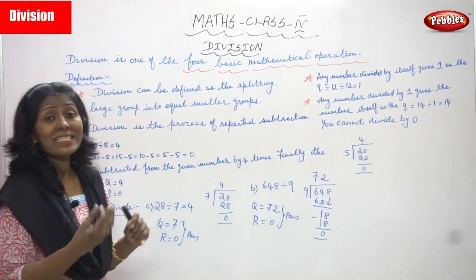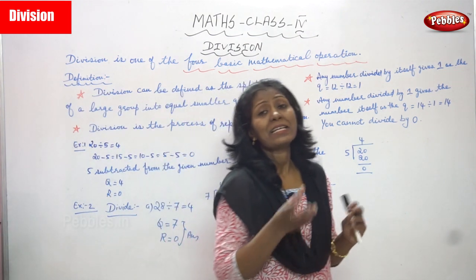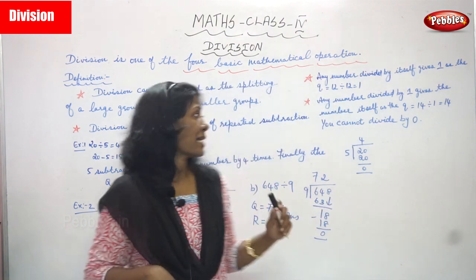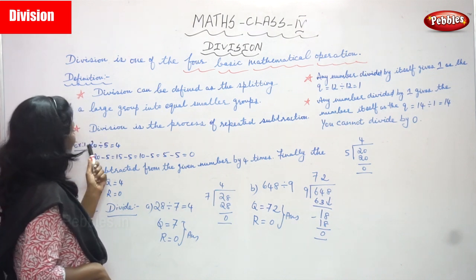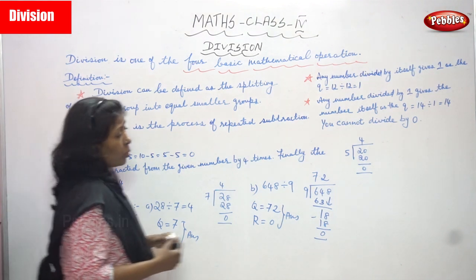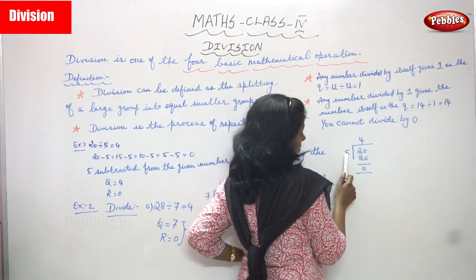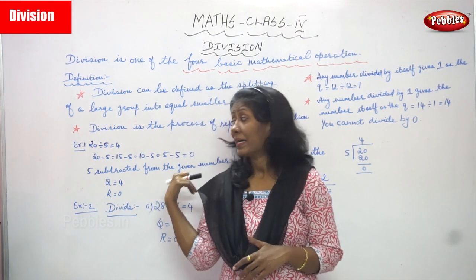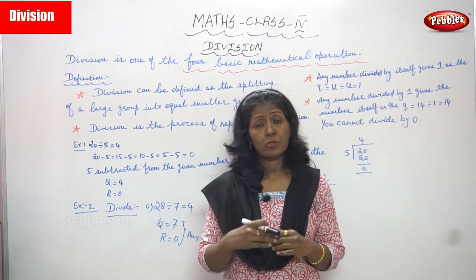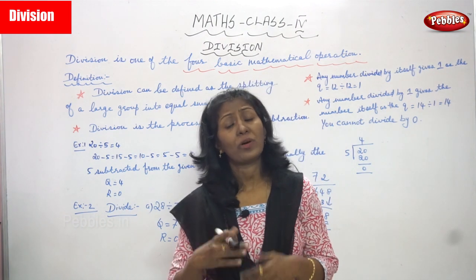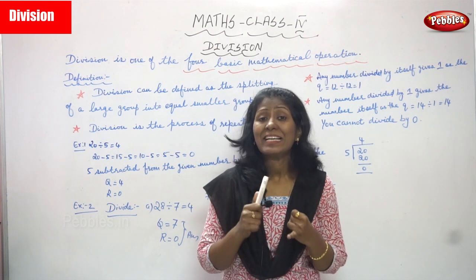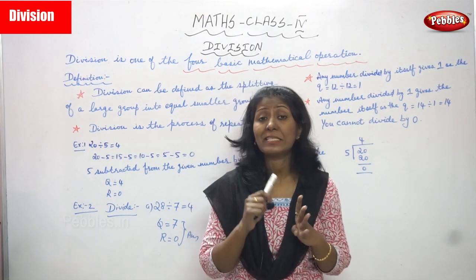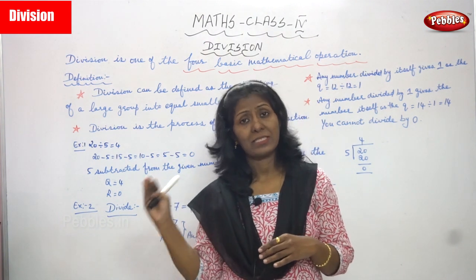Now we are going to see an example. If I give an example, you must understand division very clearly. Before we go into the example, I want to give you some terms of division. The first term is dividend, the second term is divisor, the third term is quotient, and the fourth term is remainder. These are the terms of division.